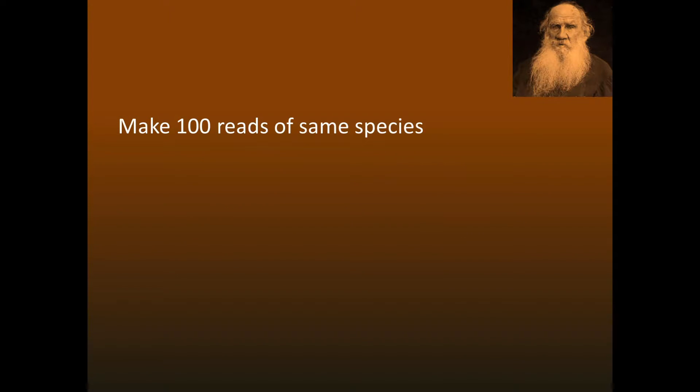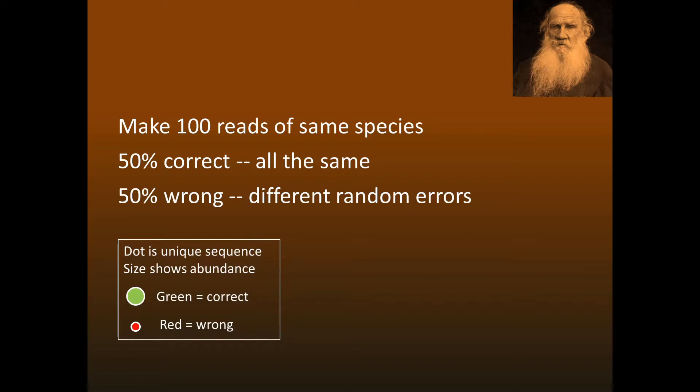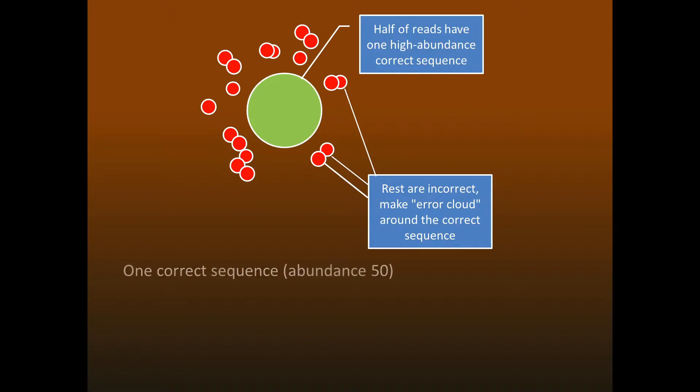Now consider what happens if there are 100 reads of the same species. Remember that half the reads are correct, and these will all have the same sequence. However, the incorrect reads will have different random errors. We can visualize this using a diagram where dots are sequences, and the size of each dot represents abundance. As we generate more reads, one high-abundance correct sequence is surrounded by an error cloud of incorrect sequences with low abundance.